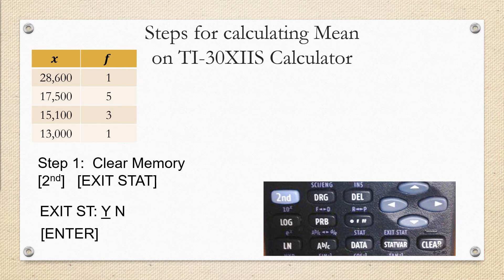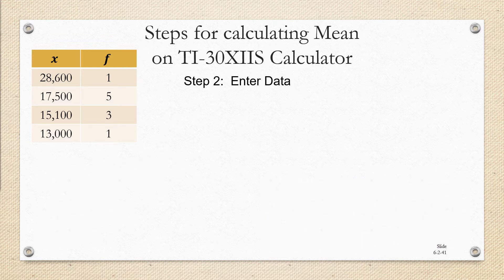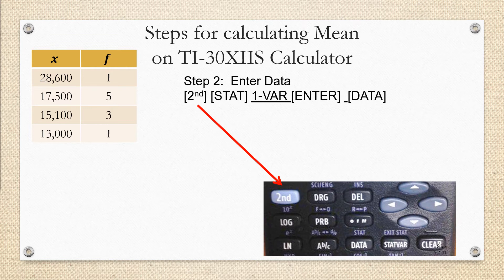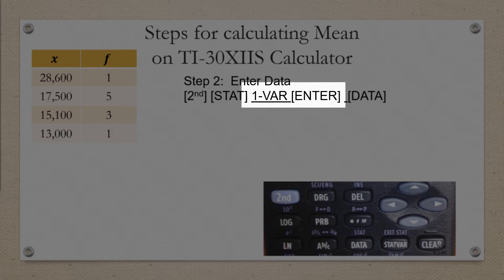Now you're ready to enter your data values. To enter the data values, you need to get back into statistics mode. So you're going to click second and then the data button, which puts you in stat mode. You'll see on your screen that the calculator automatically asks you if you want one variable or two variable statistics. We want one variable statistics, which is already underlined. So all you have to do is press enter.